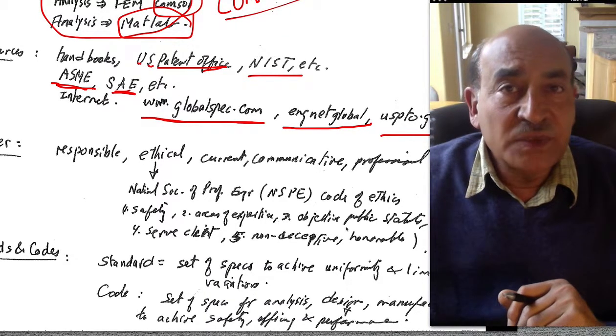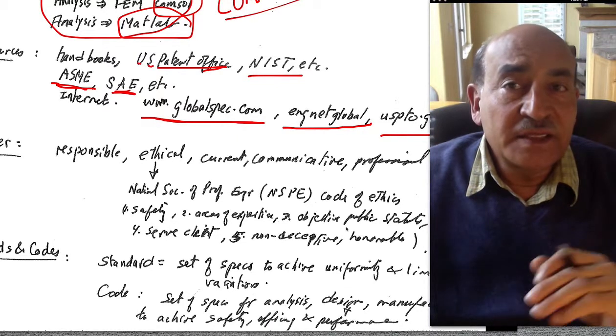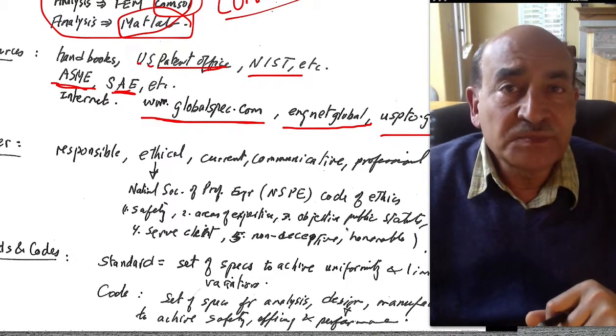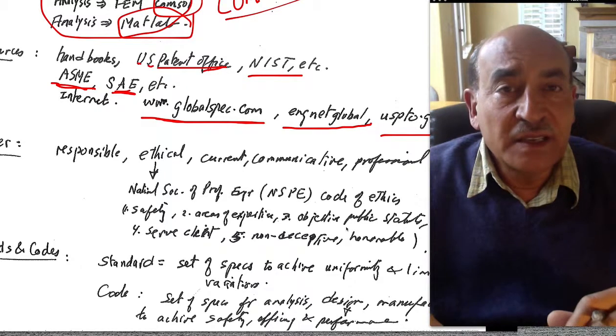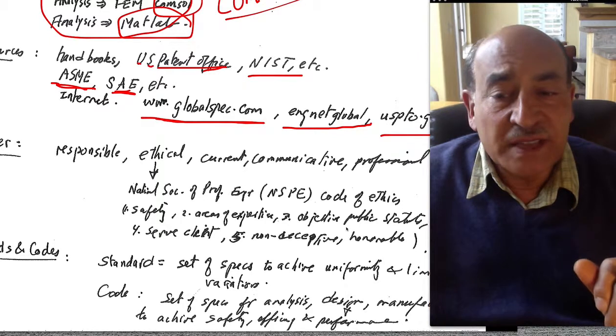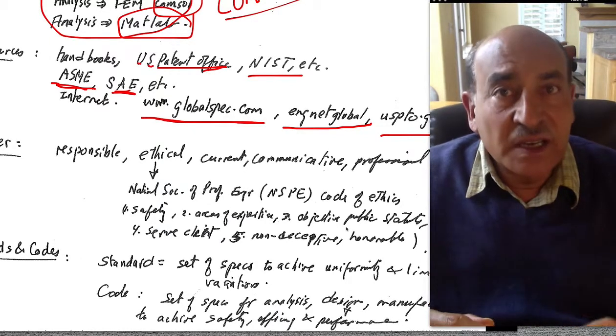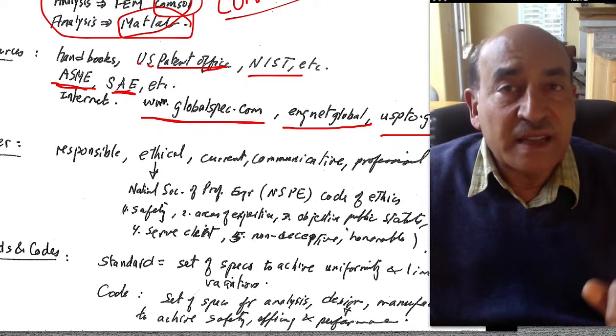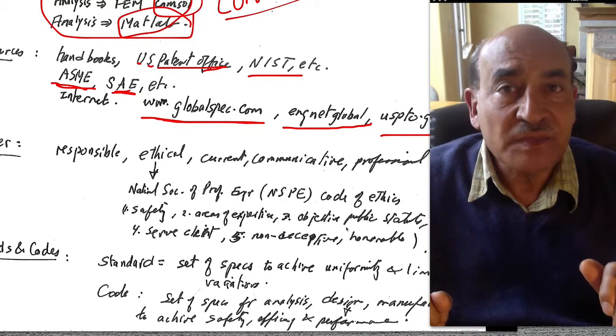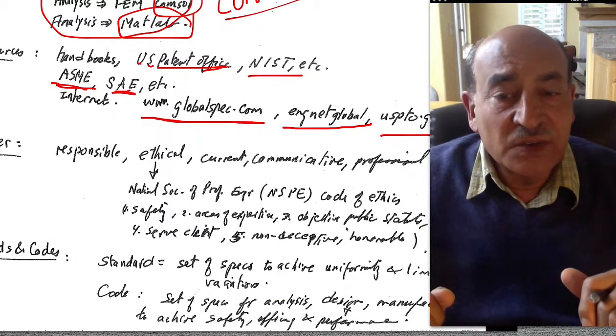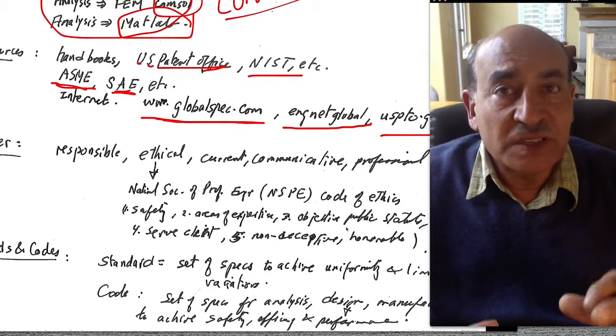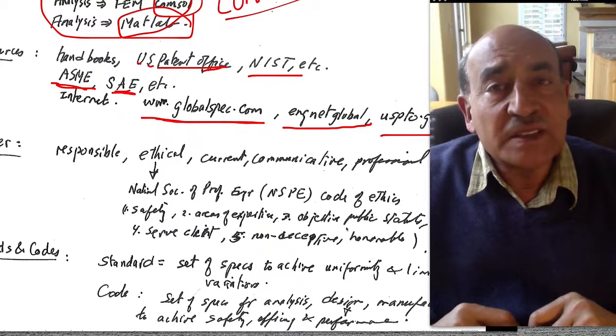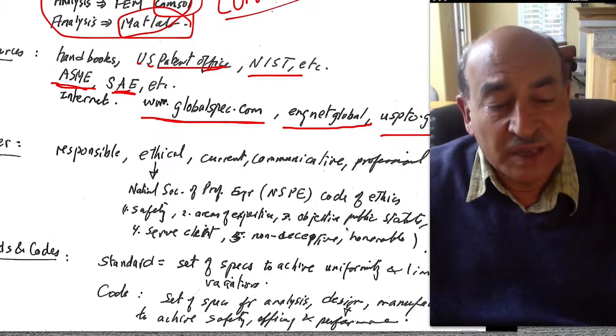In contrast to the standard, we talk about the code. The design code is again a set of specifications, but they have a different objective. The specifications are there so that when we do the analysis and the design, we conform to this set of standards. If we conform to these sets of standards, for example we should not exceed the yield strength divided by 1.5, that's a code specification. If we design to this, then we will achieve safety, we will achieve high performance and so on. So the standard is for manufacturing mainly, and the code is for the design process itself, so that the design product will function in a safe and economical fashion.